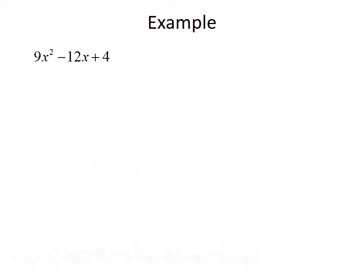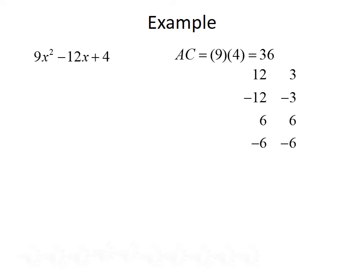Now let's look at an example where the leading coefficient is something other than 1. We have 9x squared minus 12x plus 4. We multiply the first and last coefficients: 9 times 4 gives us 36. Some factors of 36 are: 12 and 3, negative 12 and negative 3, 6 and 6, negative 6 and negative 6. Adding those: 15, negative 15, 12, and negative 12. We're looking for the group that adds to our middle term of negative 12, so the factors are negative 6 and negative 6.